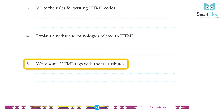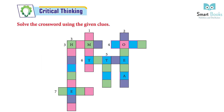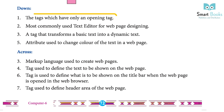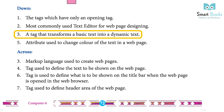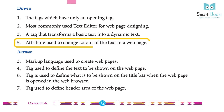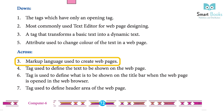Critical thinking – Solve the crossword using the given clues. Down: 1. The tags which have only an opening tag – Answer: Empty. 2. Most commonly used text editor for web page designing – Answer: Notepad. 3. A tag that transforms a basic text into a dynamic text – Answer: Hypertext. 5. Attribute used to change color of the text in a web page – Answer: Tag.